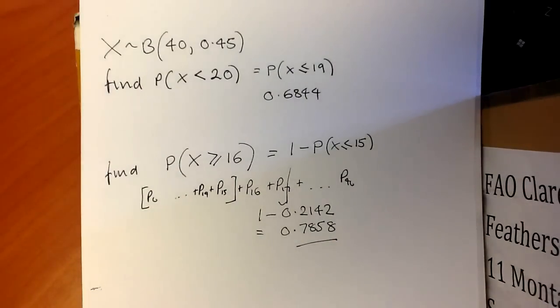That's two brief examples on how to use your cumulative distribution function for the binomial distribution.